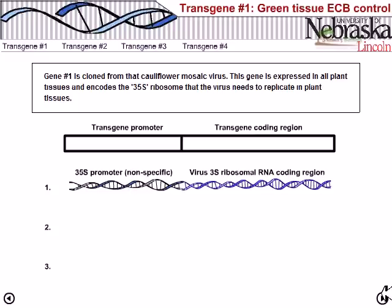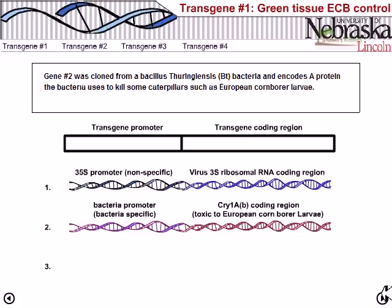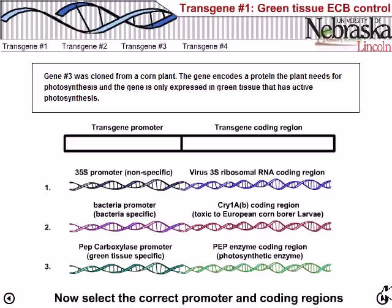We have three gene options. Gene one is cloned from the cauliflower mosaic virus and is expressed in all plant tissues, encoding the 35S ribosome that the virus needs to replicate. Gene two was cloned from Bacillus thuringiensis bacteria and encodes the protein used to kill caterpillars such as European corn borer larvae. Gene three was cloned from a corn plant and encodes the protein needed for photosynthesis, expressed only in green tissue with active photosynthesis.